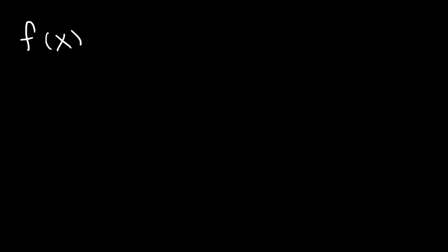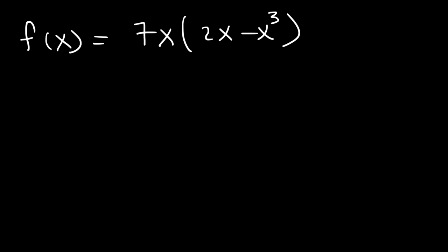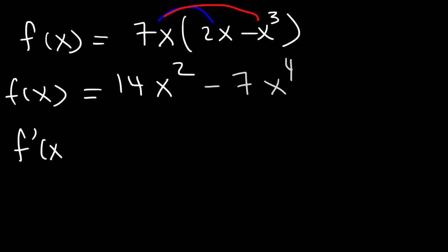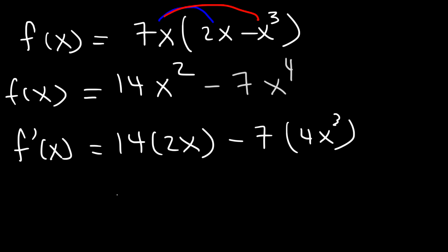Now let's say we have a function that looks like this: 7x times the quantity 2x minus x cubed. How can we find the derivative of this function? If you see an expression like this, go ahead and distribute. Distributing 7x to 2x gives 14x squared, and multiplying 7x by negative x cubed gives negative 7x to the 4th power. Now in this form we can find the first derivative. The derivative of x squared is 2x, and the derivative of x to the 4th is 4x cubed. So the final answer is 28x minus 28x cubed.